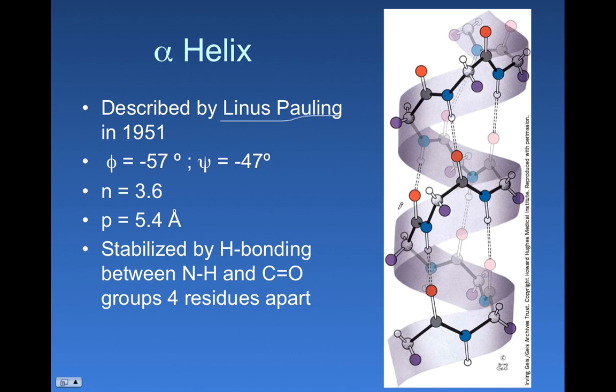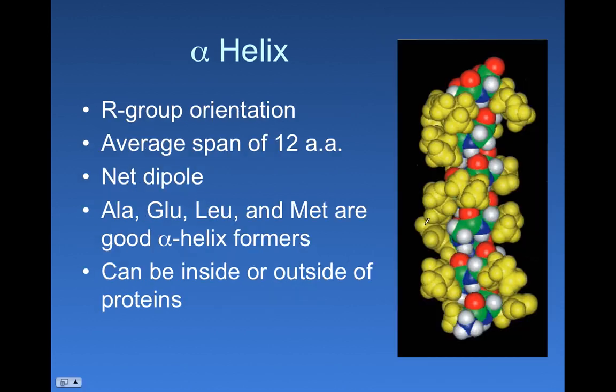P is pitch. The distance between one level and the next is about 5.4 angstroms. And the alpha helix is stabilized between hydrogen bonds in the peptide chain. Again, these hydrogen bonds are not dependent on R groups. They're between the hydrogen on the nitrogen and the oxygen on the carbonyl group of peptide bonds between different levels in this helix.